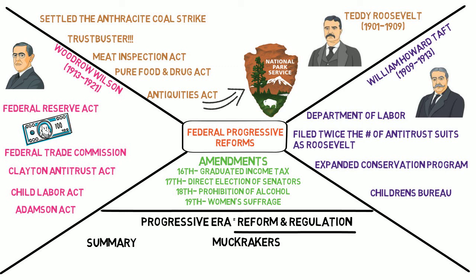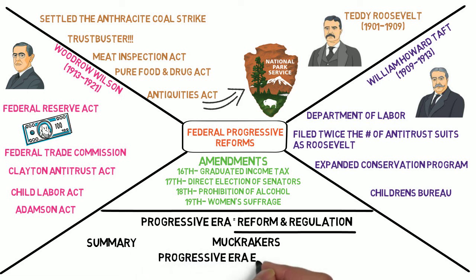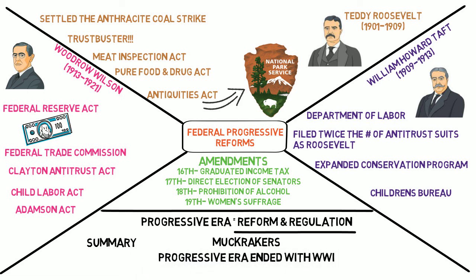These included the Meat Inspection Act and the Pure Food and Drug Act, the Antiquities Act, the 16th, 17th, and 19th Amendments, and the Federal Reserve Act. However, the enthusiasm for progressive reforms began to fade as America became involved in World War I.